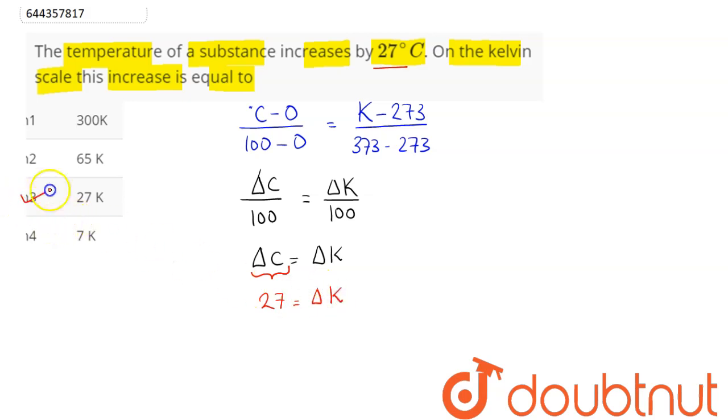Hence, we can say 27 Kelvin is the corresponding change in temperature or increase in temperature. Hence, option 3 is the correct answer. So, 3 is our answer.